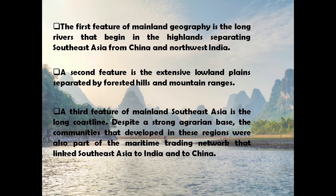The first feature of mainland geography is the long rivers that begin in the highlands separating Southeast Asia from China and northwest India. A second feature is the extensive lowland plains separated by forested hills and mountain ranges. The third feature of mainland Southeast Asia is the long coastline.